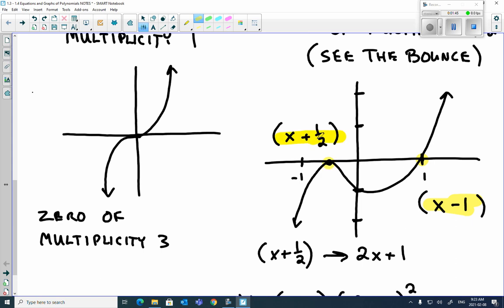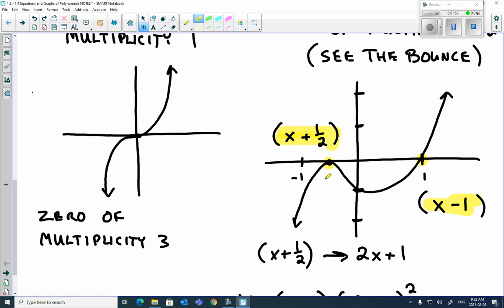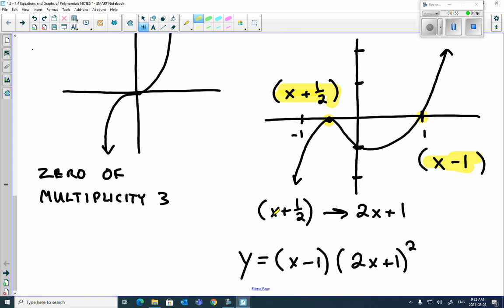This one crosses at negative 2, so our binomial is x plus... sorry, crosses at negative 1 half, so our binomial is x plus 1 half. But you can see it bounces here. We can first off convert x plus 1 half back to what it looks like, which is 2x plus 1.